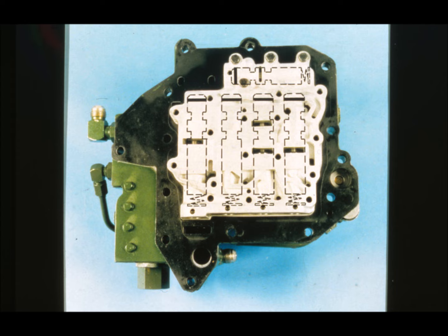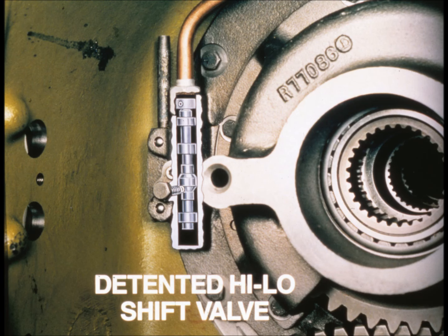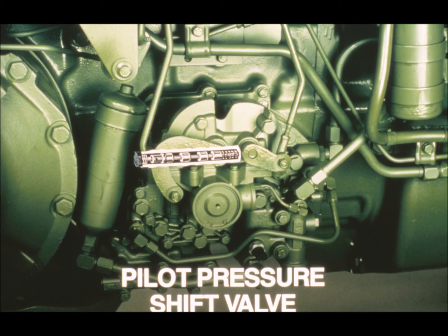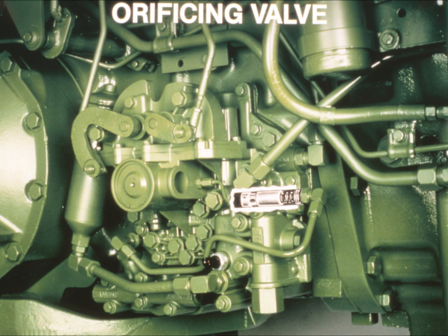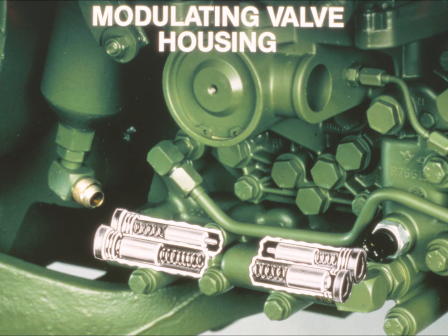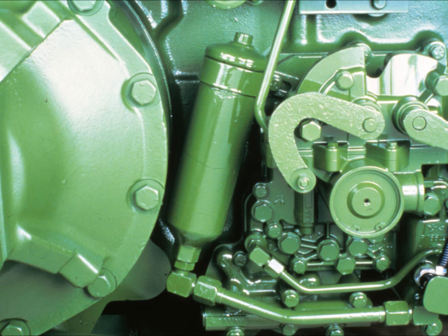The detented high-low shift valve is a two-position valve that stays in one position until pushed to the other. It controls the B-high brake and C-low clutch in the input planetary, making sure that one or the other is always engaged. The pilot pressure shift valve works with the rotary valve to select tractor speeds and is controlled by the forward-reverse valve. The orificing valve restricts the flow of engagement oil in speeds 12 to 15, helping smooth out shifts in transport speeds. The modulating valve housing components also work to make shifts in transport speeds smooth. And finally, the system accumulators make sure there is an adequate supply of control circuit oil during shifts from one speed to another.